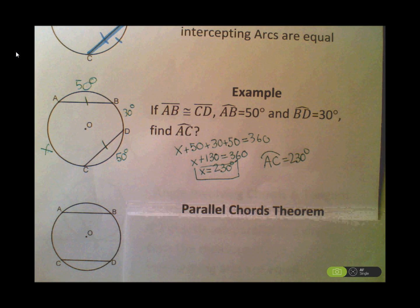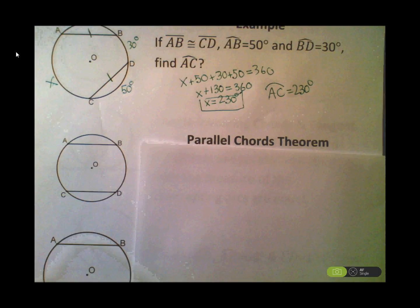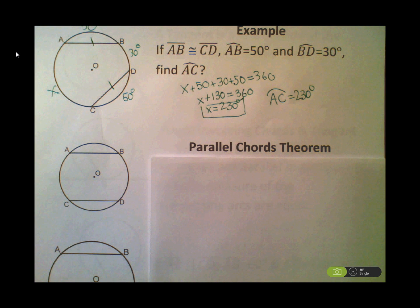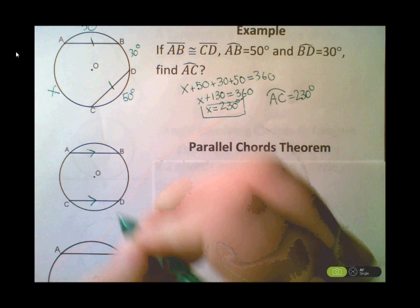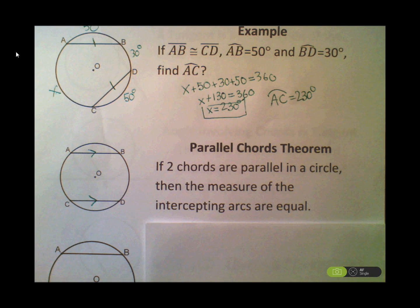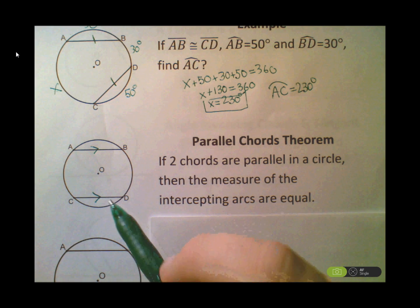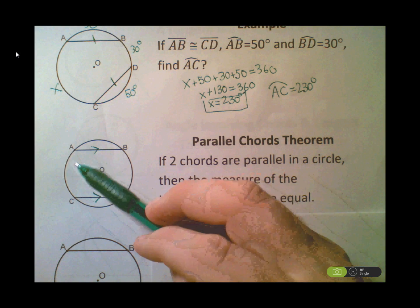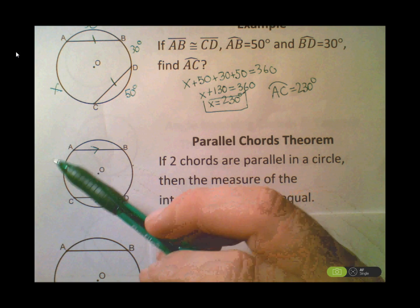Now let's look at another theorem: the Parallel Chord Theorem. This one comes up a bit more often. The theorem says that if I have two parallel chords, then the arcs being intercepted are equal. The intercepted arcs are not going to be AB and CD — it's going to be AC and BD, the ones opposite each other going in the same direction as the parallel chords.